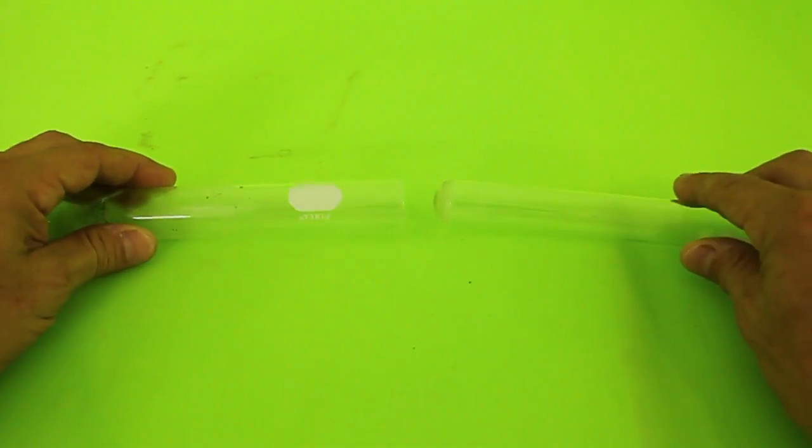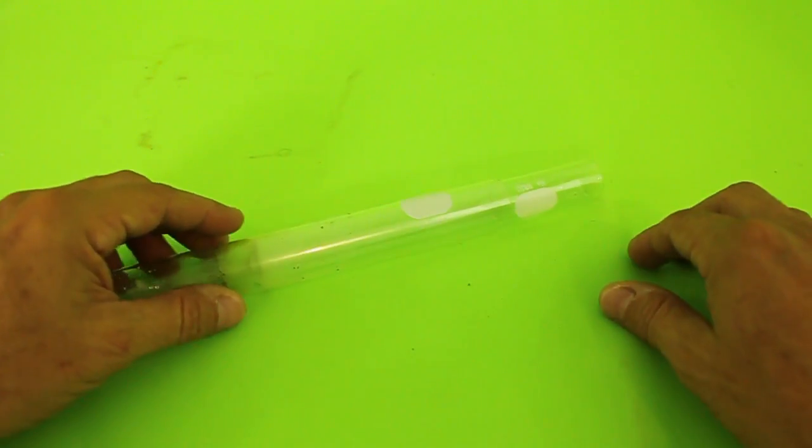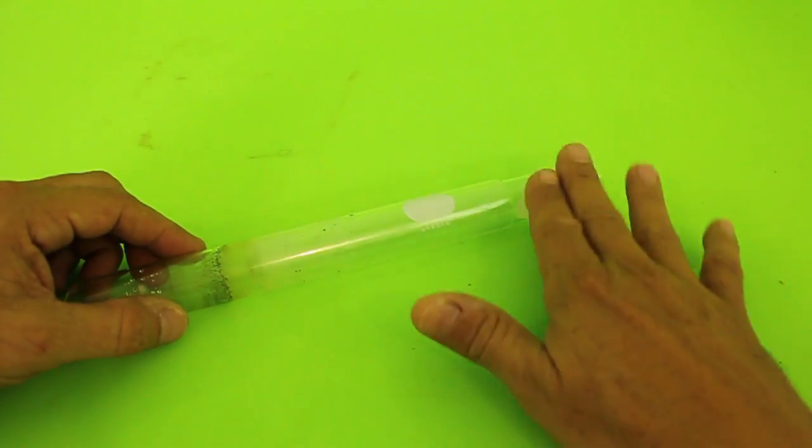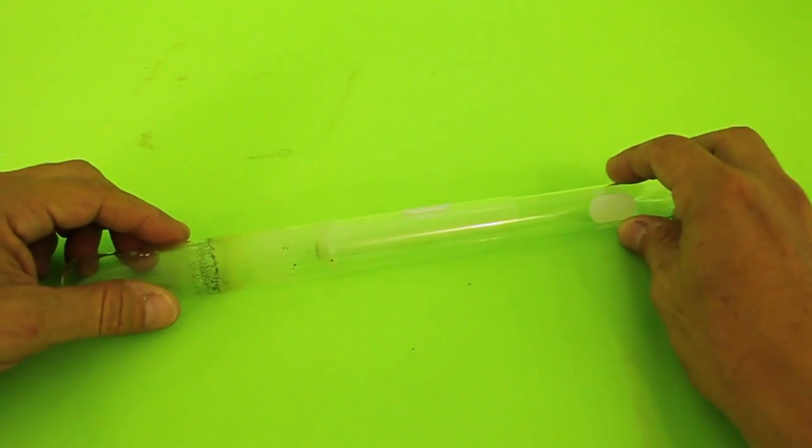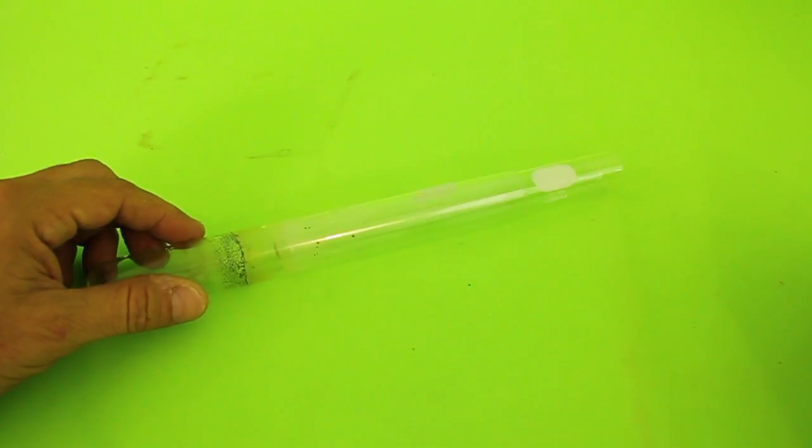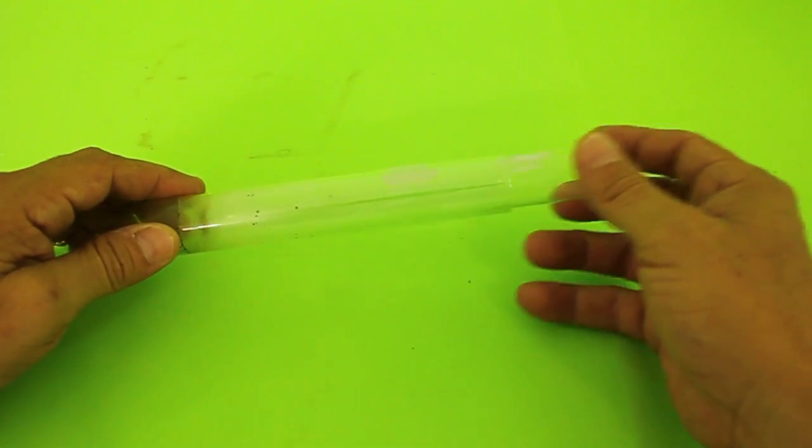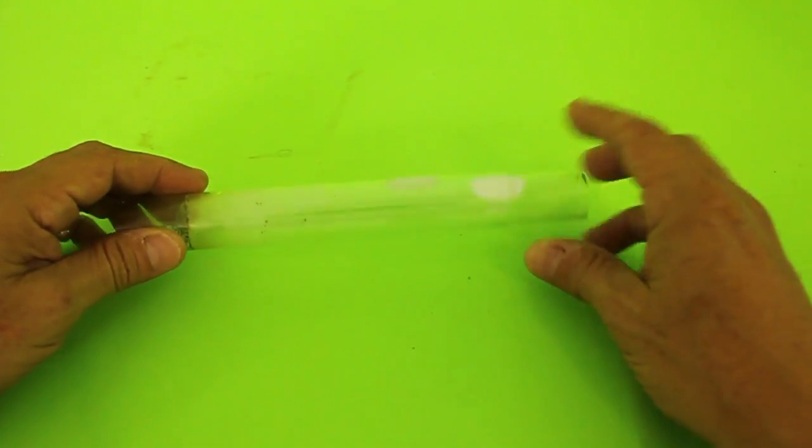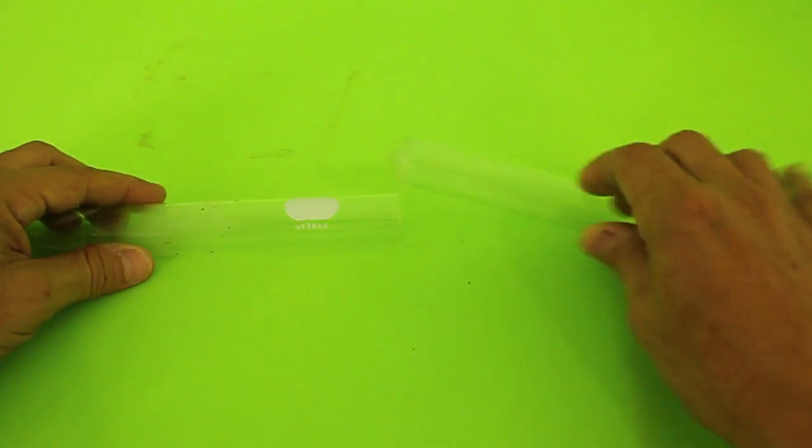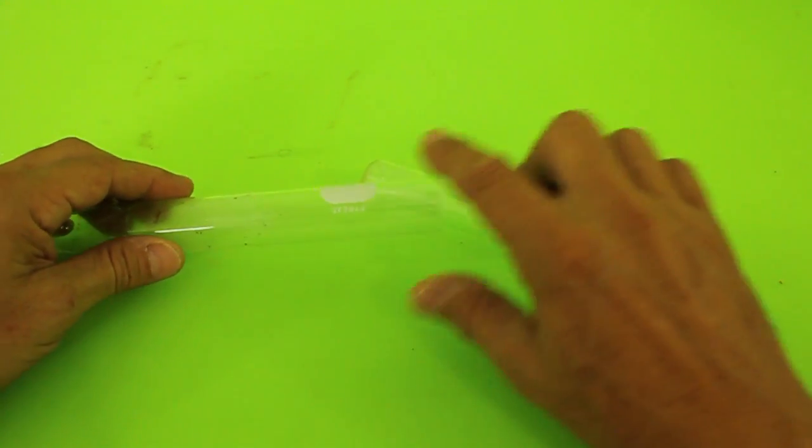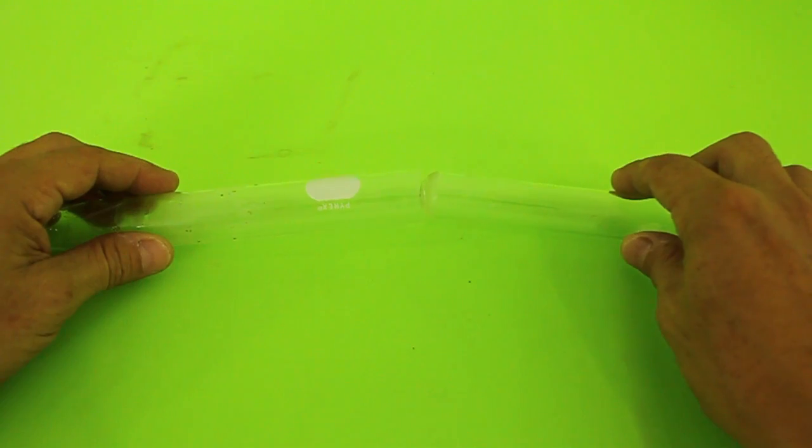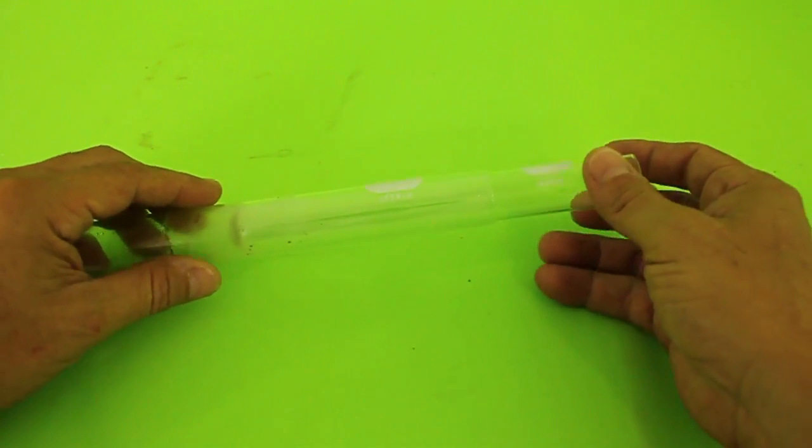You don't need these exact diameters of tubes. You can use different diameters but the smaller one must fit as tight as possible in the larger one because this will be our piston and the other is the cylinder.